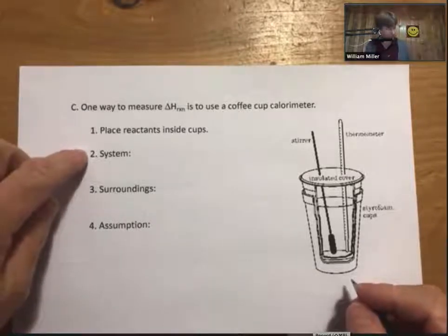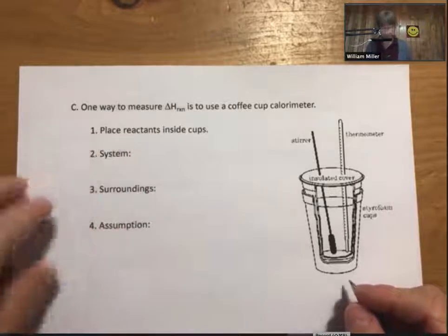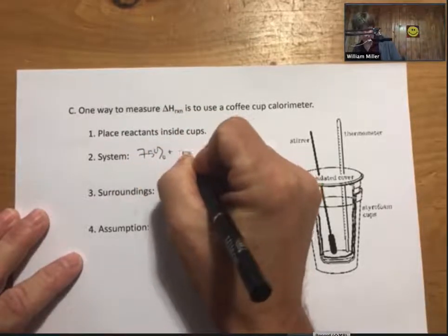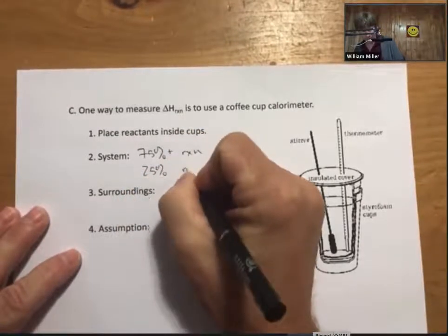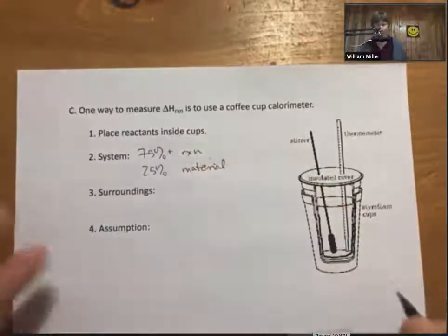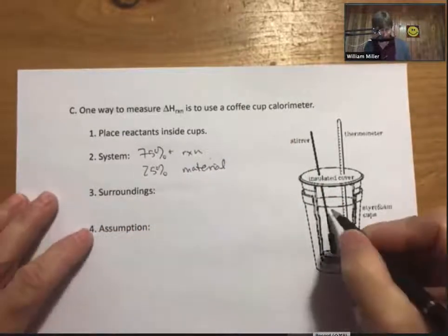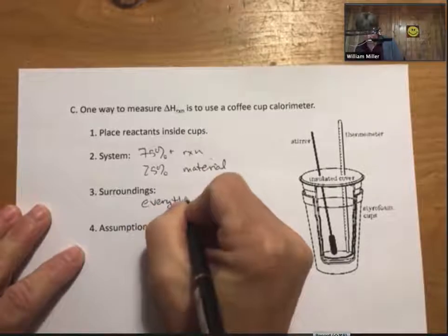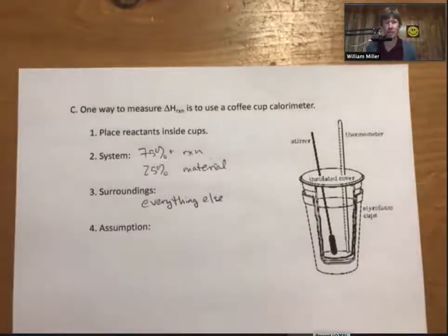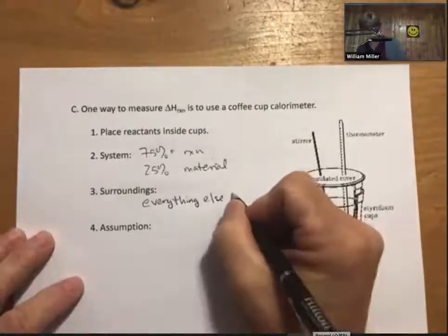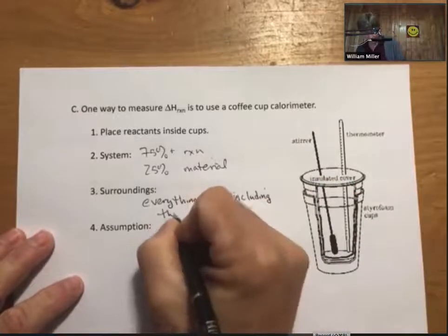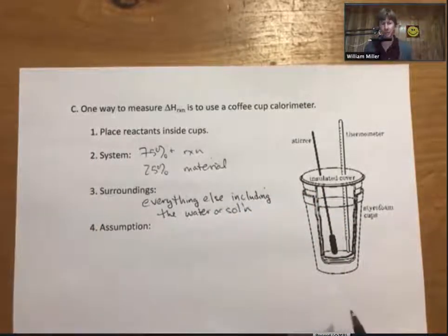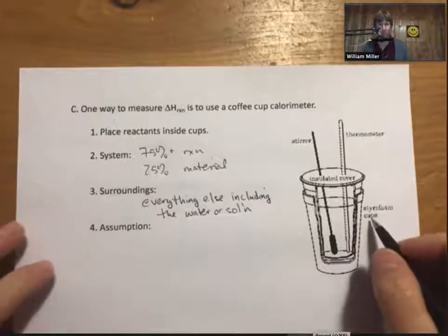So we will see that when we place reactants inside cups, that the system will typically be 75% plus reaction, 25% material. And I'll show you again what this means more specifically. But that is the definition of the system. The surroundings is everything else, including the water or solution.